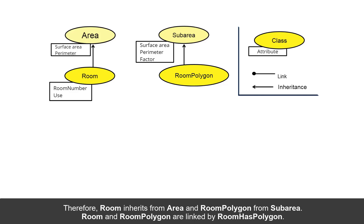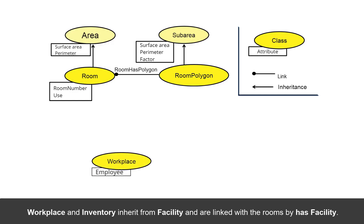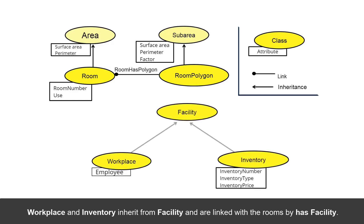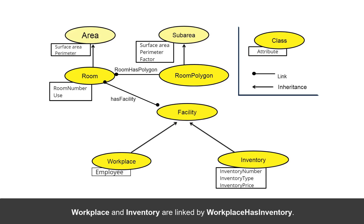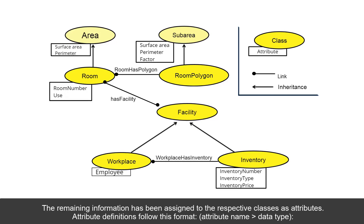Room and room polygon are linked by room has polygon. Workplace and inventory inherit from facility and are linked with the rooms by has facility. Workplace and inventory are linked by workplace has inventory. The remaining information has been assigned to the respective classes as attributes.